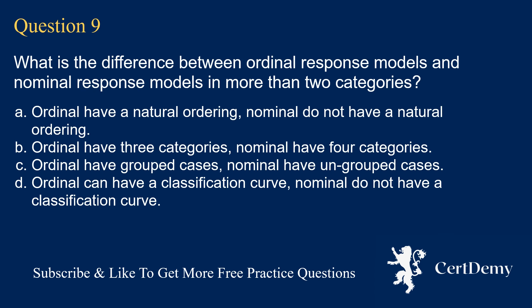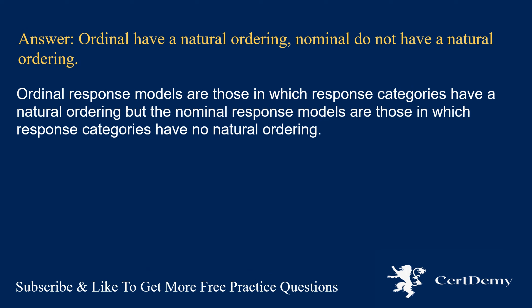Question 9. What is the difference between ordinal response models and nominal response models in more than two categories? Options: ordinal have a natural ordering and nominal do not; ordinal have three categories and nominal have four; ordinal have grouped cases and nominal have ungrouped cases; ordinal can have a classification curve and nominal cannot. The answer is: ordinal have a natural ordering and nominal do not have a natural ordering. Ordinal response models have response categories with a natural ordering, but nominal response models have response categories with no natural ordering.